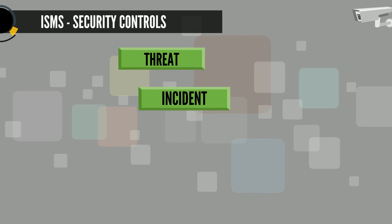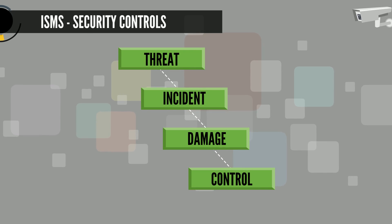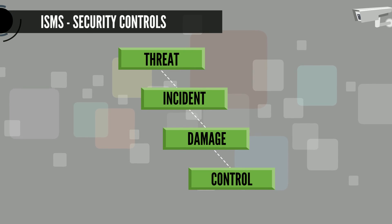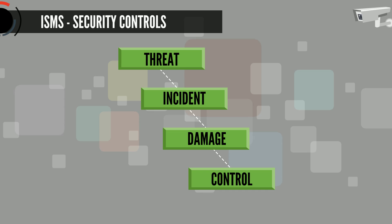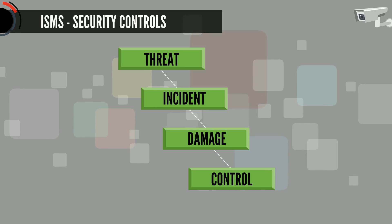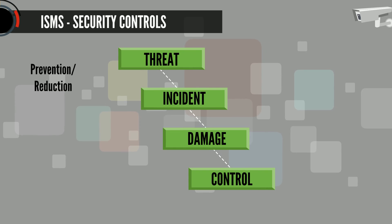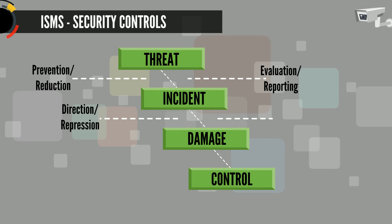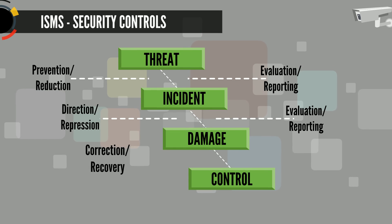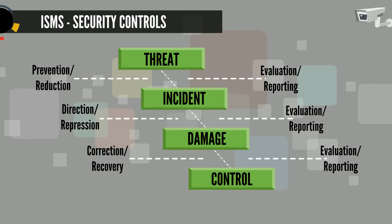Information security is not a step in the life cycle of services. It needs to be an integral part of all services and is an ongoing process that needs to be monitored continuously. Security measures can be used at a specific stage in the prevention and handling of security incidents, as illustrated.